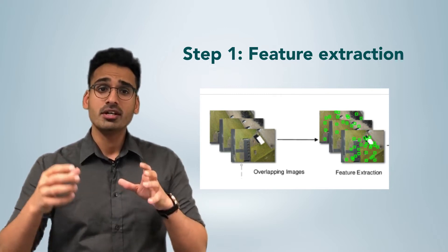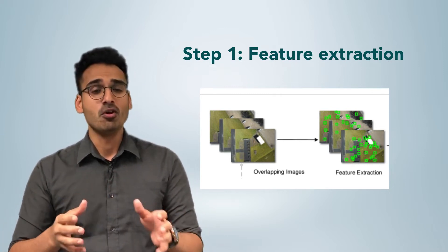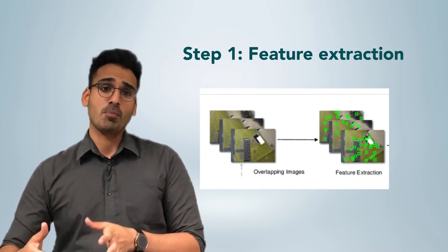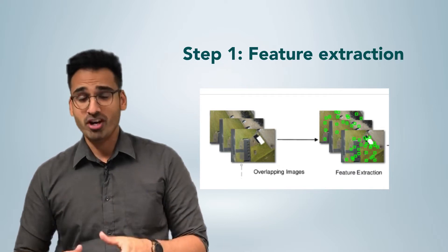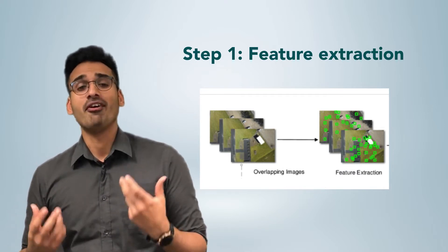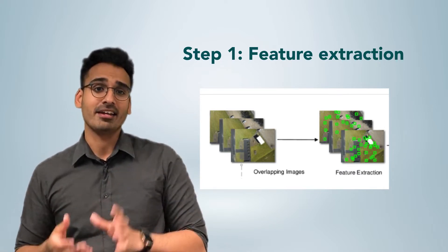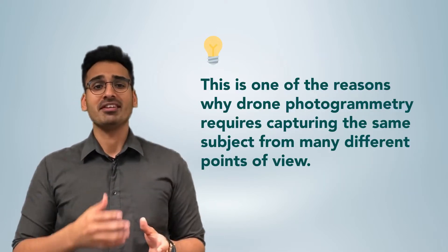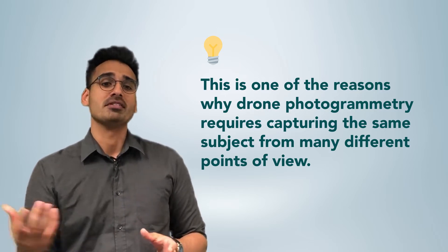These features are invariant to changing camera positions—they look the same from different points of view. Therefore, good features in a scene typically have similar descriptions, that is mathematical structures in all images, and the software can actually find and extract that in the first step. This is one of the reasons why drone photogrammetry requires capturing the same subject from many different points of view.